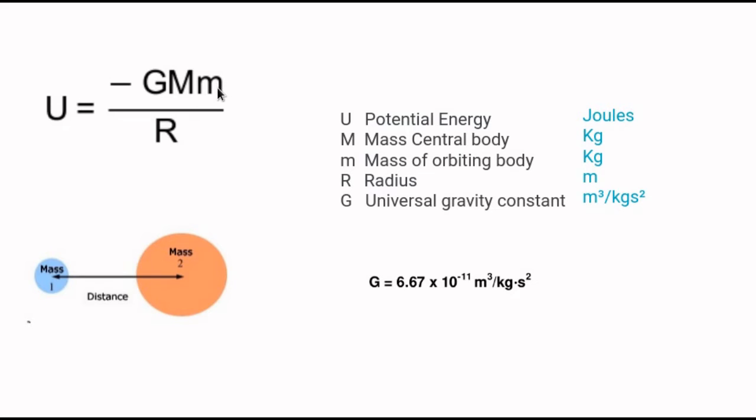The central body is more or less stationary. You multiply that times the mass of the smaller body m, divided by the radius R between them, which is measured from the center of one to the center of the other.